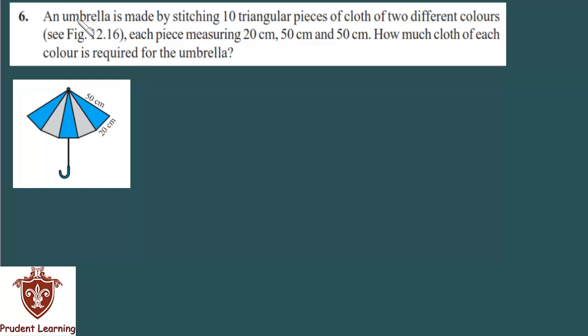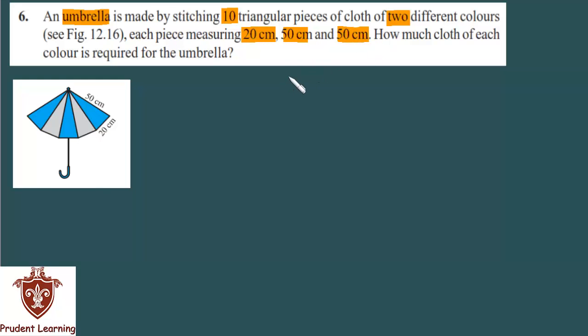Q6. An umbrella is made by stitching 10 triangular pieces of cloth of two different colors. See figure 12.16. Each piece measuring 20 cm, 50 cm and 50 cm. How much cloth of each color is required for the umbrella?